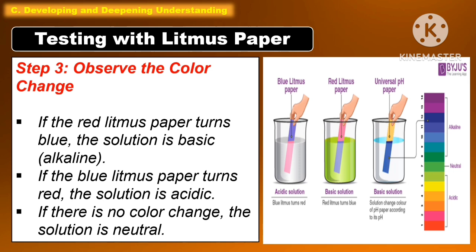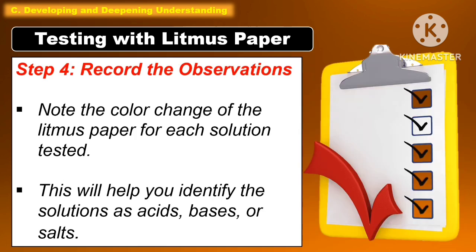For step three, observe the color change. If the red litmus paper turns blue, the solution is basic or alkaline. If the blue litmus paper turns red, the solution is acidic. If there is no color change, the solution is neutral. For step four, record the observation by noting the color change of the litmus paper for each solution tested. This will help you identify the solutions as acids, bases, or salts.